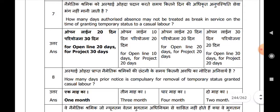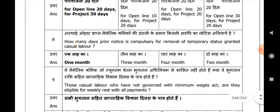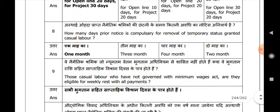How many days prior notice is compulsory for removal of temporary status granted casual labour? One month. Those casual labour who have not been governed by the Minimum Wages Act — are they eligible for weekly rest with full payment?